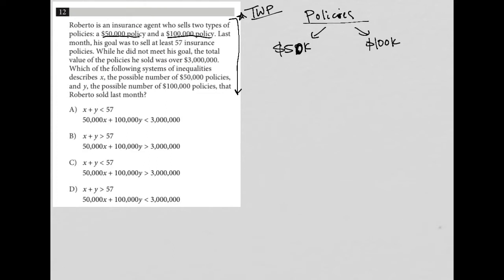The next sentence says last month, his goal was to sell at least 57 insurance policies. We don't know how many of each type he sells. So how do I translate that sentence? I'm going to assign a variable to 50,000 and call it X, and assign a variable to 100,000 and call it Y. I peek down at my answer choices and see X and Y in all of them, so I'm confident with that.